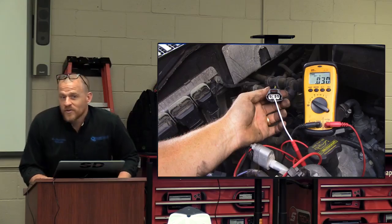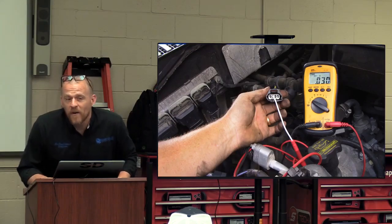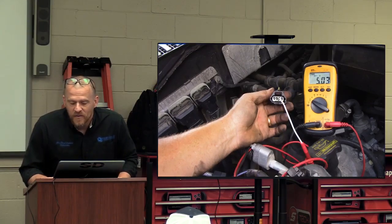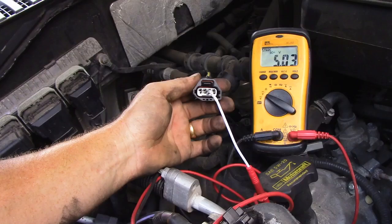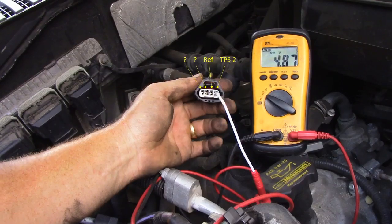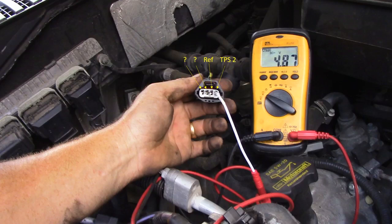One of those two is my ground. One of those two is a signal wire, the one without bias. What's this one? Looks like the 5-volt reference. Let's check one more. That one's 4.87. That's got to be the signal with the bias, TPS2.